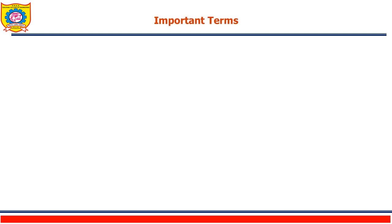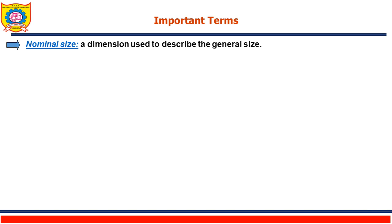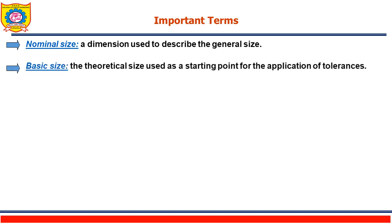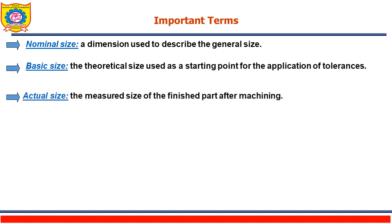Let us learn some important terms. Nominal size: a dimension used to describe the general size is called nominal size. Basic size: the theoretical size used as a starting point for the application of tolerances is the basic size. Actual size: the size measured for the finished part after machining or manufacturing is the actual size.